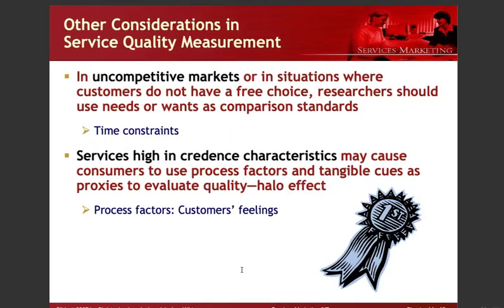Additional considerations in service quality measurement: in an uncompetitive market or when customers do not have free choice, researchers should use needs or wants as comparison standards. Services with high credence characteristics may cause consumers to use process cues and tangible cues as proxies to evaluate quality — a halo effect. Tangible cues such as the appearance of a building's lobby, for example in a hotel or cinema, can serve as quality indicators.